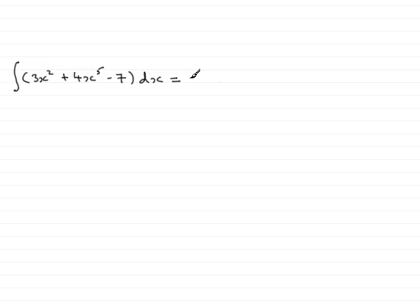So for the first term we have 3x squared, we add 1 to the power so it now goes up to the power 3 and we divide by the new power, so that's 3 there. For the next term we add 1 to the power so we get 4x to the power 6 and again divide by the new power.